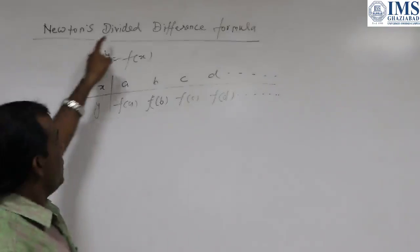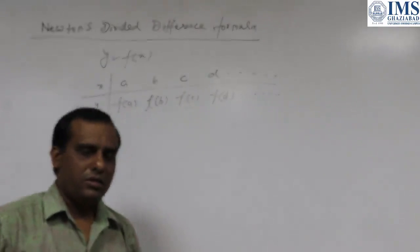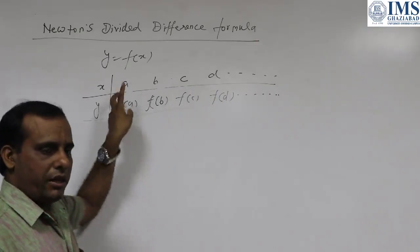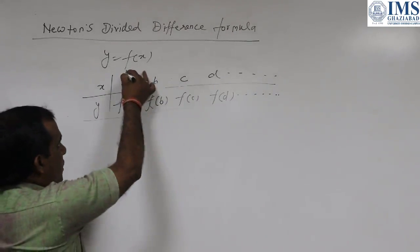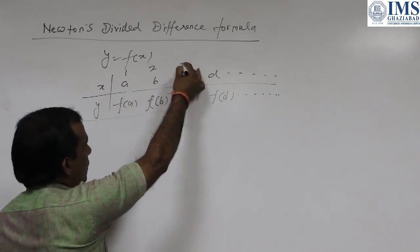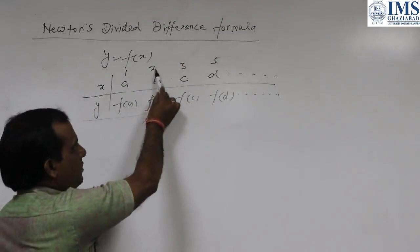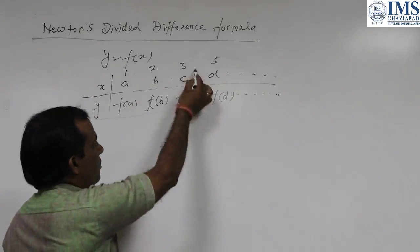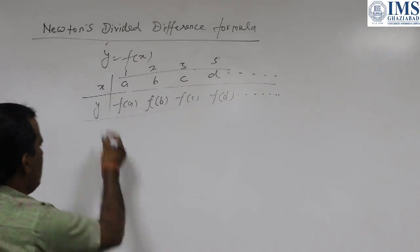Another important condition is that when the difference between any two successive values of x is not equal, then we will use the Newton Divided Difference Formula. Suppose the values are 1, 2, 3, and 5. The difference between 1 and 2 is 1, between 2 and 3 is also 1, but between 3 and 5 is 2 — so the differences are not equal, and we use this formula.